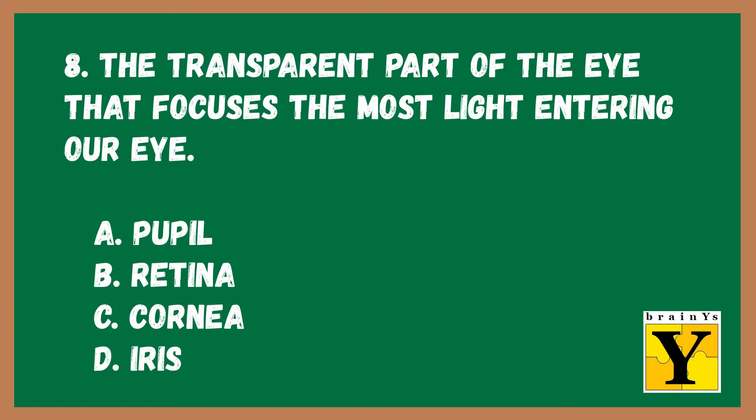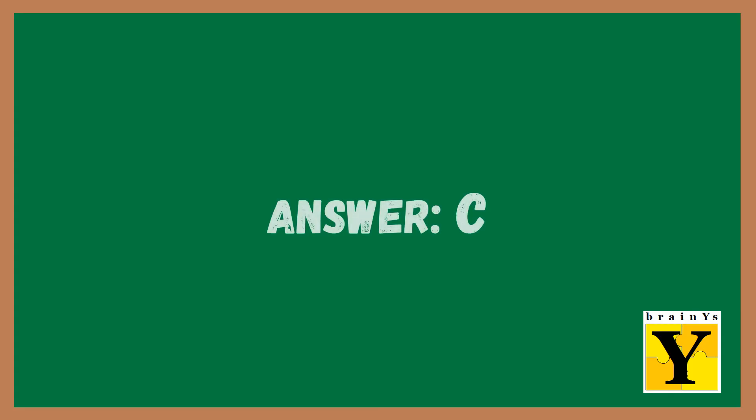Number eight: The transparent part of the eye that focuses the most light entering our eye is A. Pupil, B. Retina, C. Cornea, D. Iris. The answer is C.